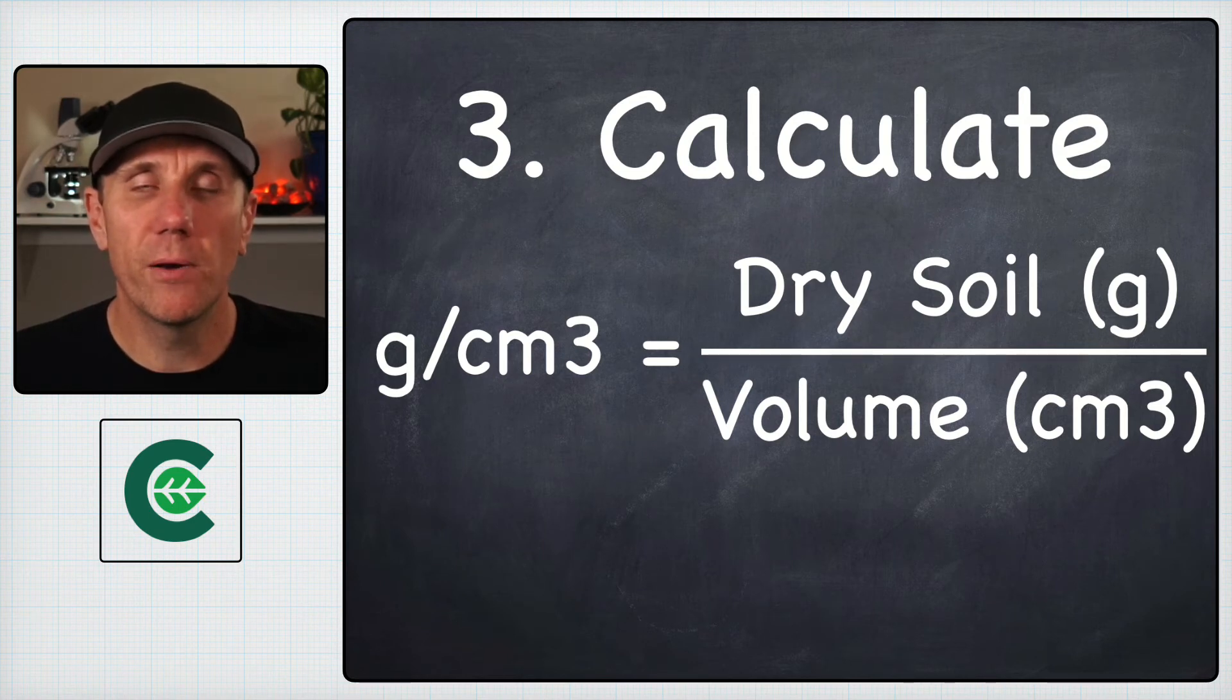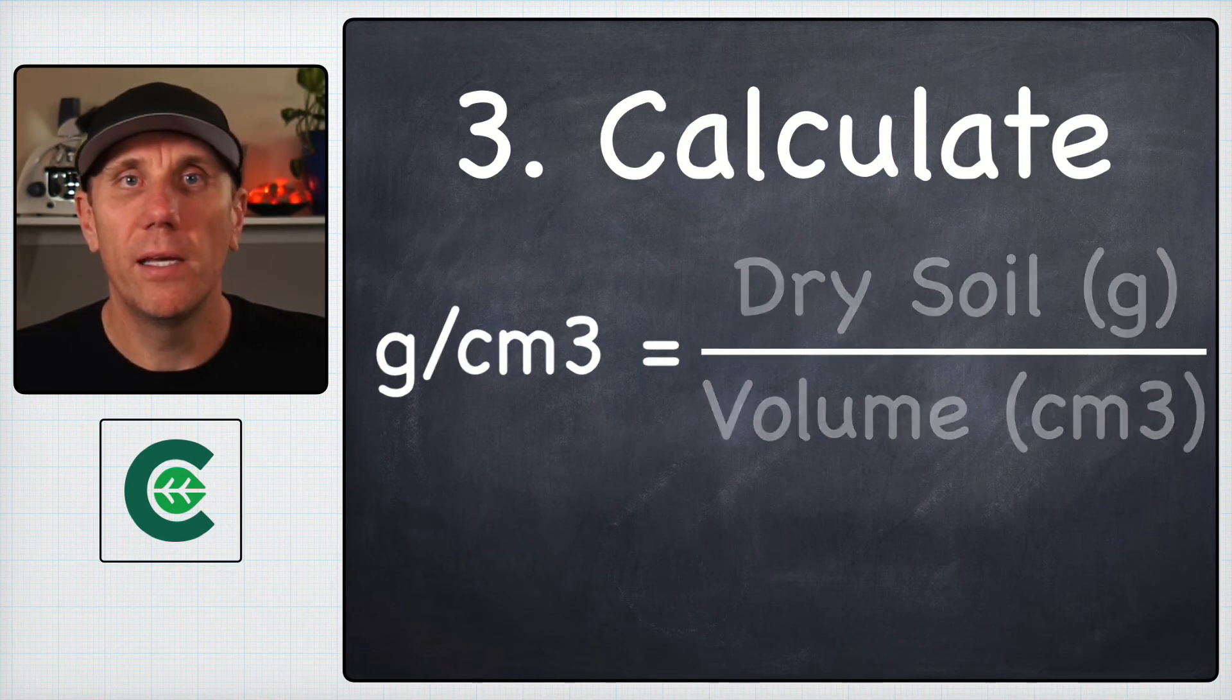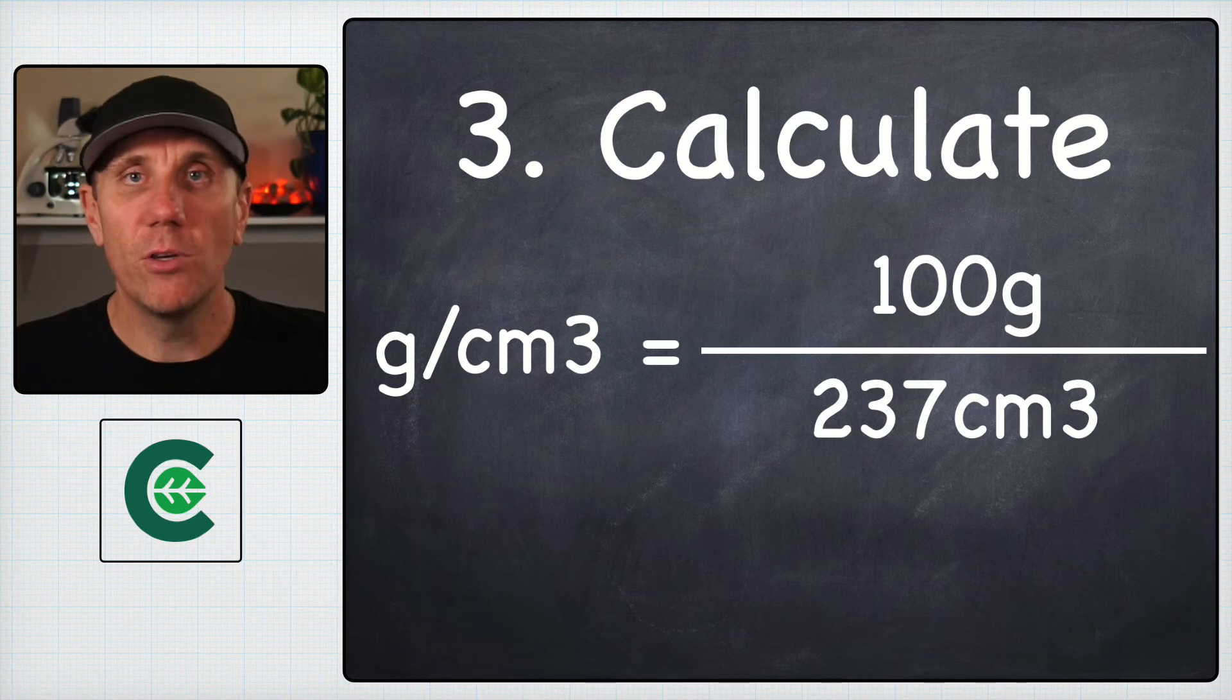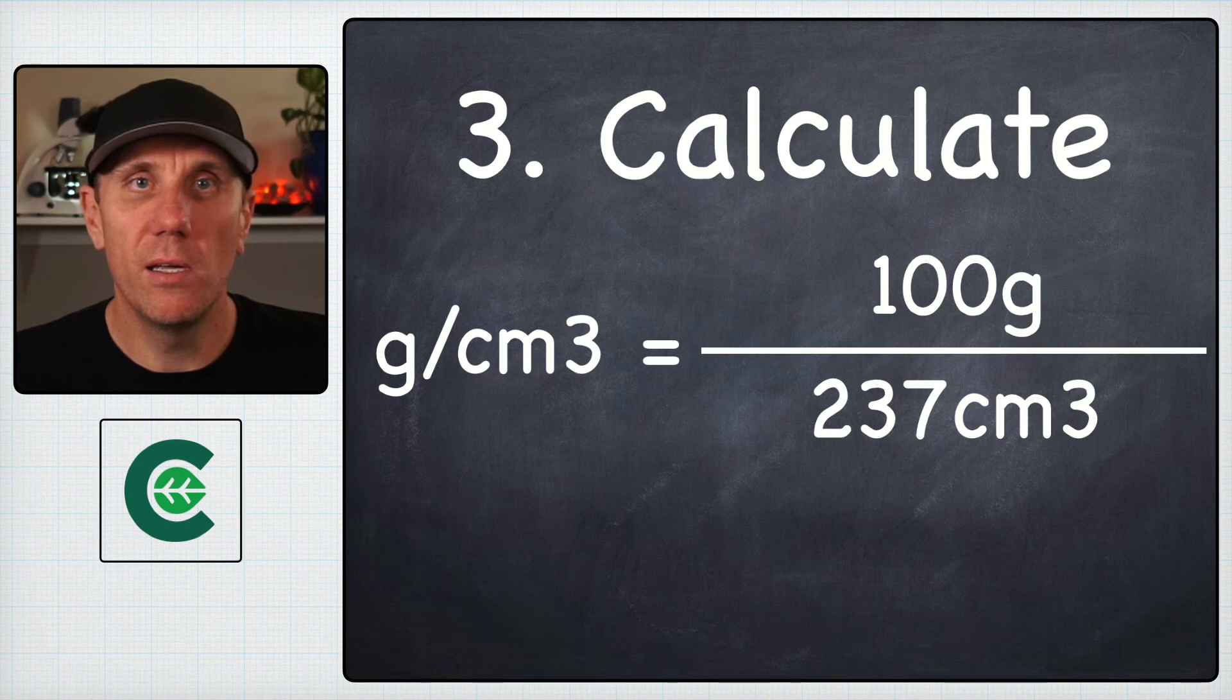The way we calculate this is by taking the dry soil weight in grams, dividing it by the volume of our container. If we use 100 grams as our value for one cup of dried soil, there's 237 cubic centimeters in a one cup measuring cup.